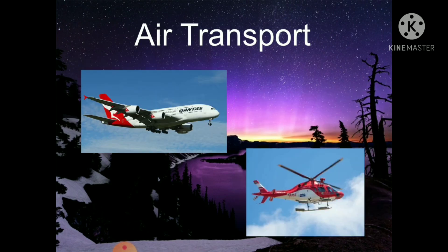Air Transport: Air transport is the fastest means of transport and also the most expensive. It is used to cover long distances in a short time and helps us to reach far off places in a few hours. We use aeroplanes and helicopters as means of air transport. They need an airport to take off and land. Most of the big cities in India have airports.